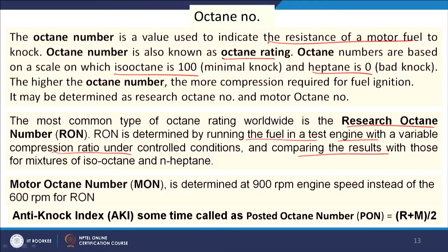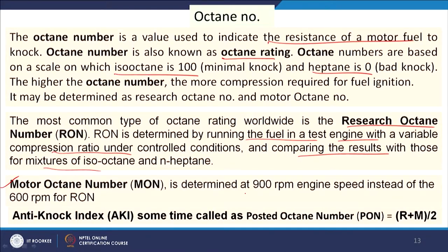RON is determined by running the fuel in a test engine with variable compression ratio under controlled conditions, comparing results with iso-octane and heptane mixtures. Motor octane number (MON) is also used when the vehicle is on the road with actual loading — higher RPM of 900 rpm is used, whereas for RON it is 600 rpm. Anti-knock index is also used in some countries, defined as (RON + MON) / 2.